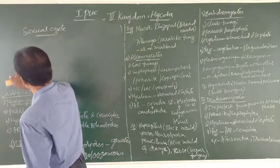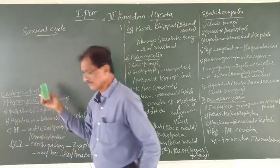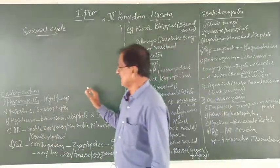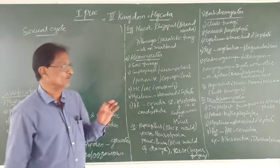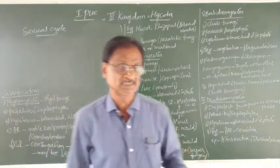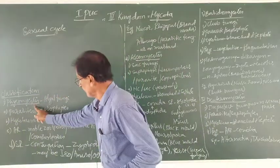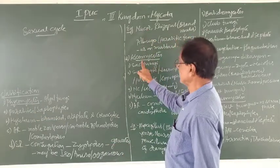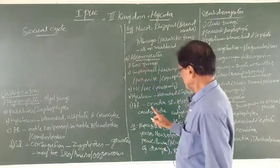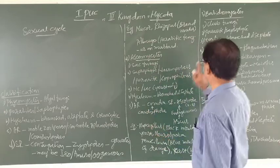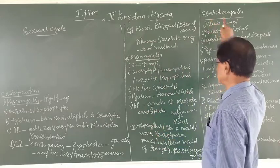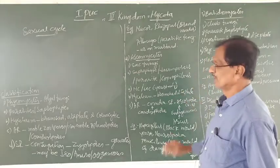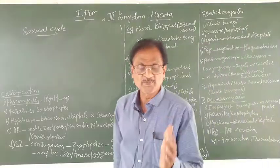Next is the classification of Fungi. The kingdom Mycota is classified into four classes: one is phycomycetes, second is ascomycetes, third is basidiomycetes, and the last one is deuteromycetes. Now let us go one by one.